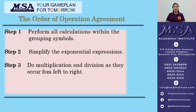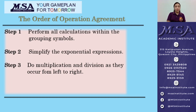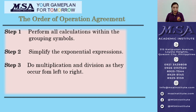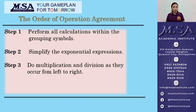Step 3: do multiplication and division as they occur from left to right. So that means if division comes first before multiplication, then you need to do division before you multiply, and vice versa. If multiplication comes first before division, then you need to do multiplication first before you divide.